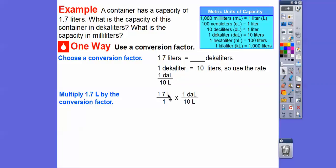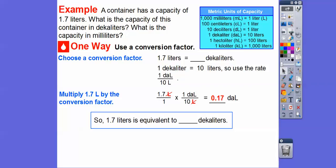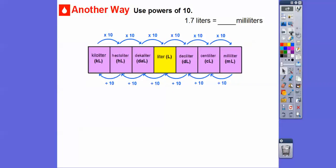Let's multiply 1.7 liters times 1 decaliter for 10 liters. Notice these liters cancel. 1.7 divided by 10 is like moving the decimal one place to the left—when we divide by 10, we move it over here. So it's 0.17 decaliters. 1.7 liters is equivalent to 0.17 decaliters.